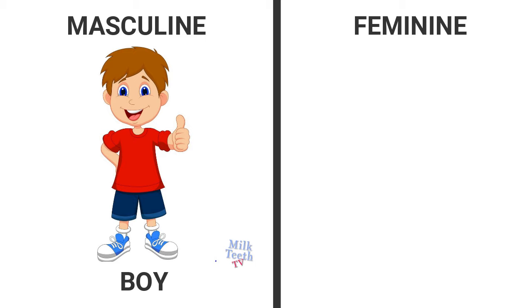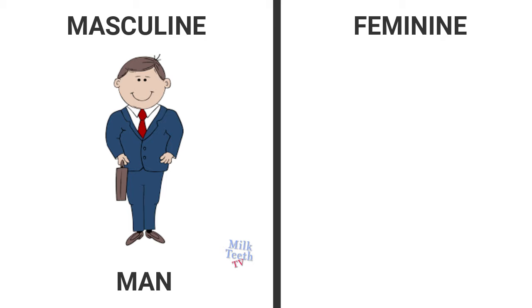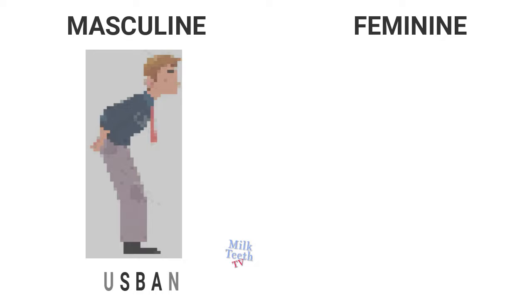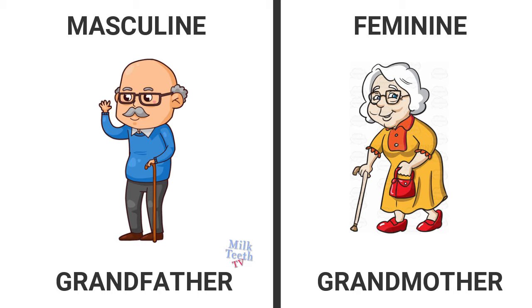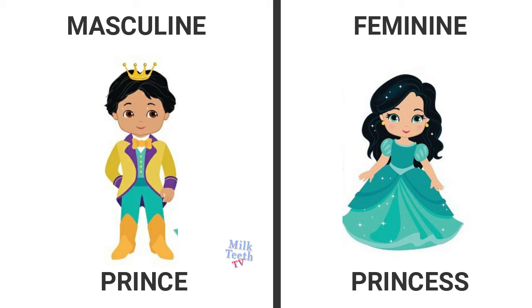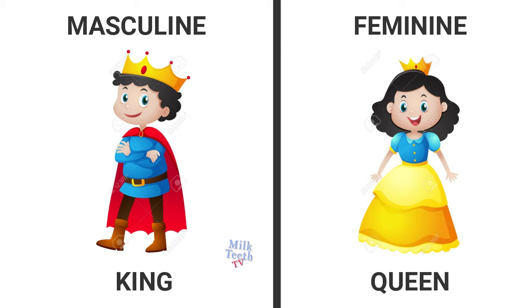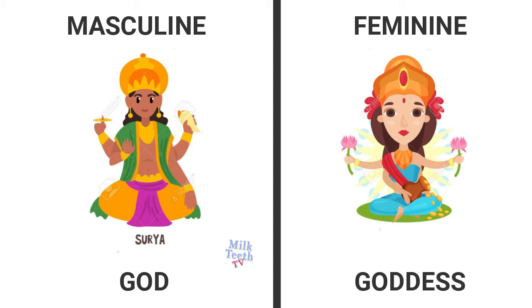Let's see a few examples. Boy — girl. Man — woman. Husband — wife. Grandfather — grandmother. Prince — princess. King — queen.